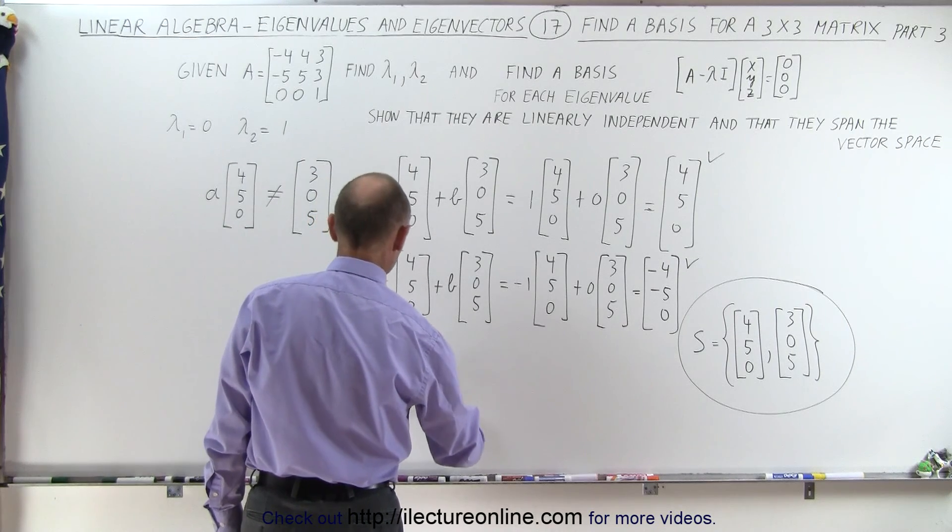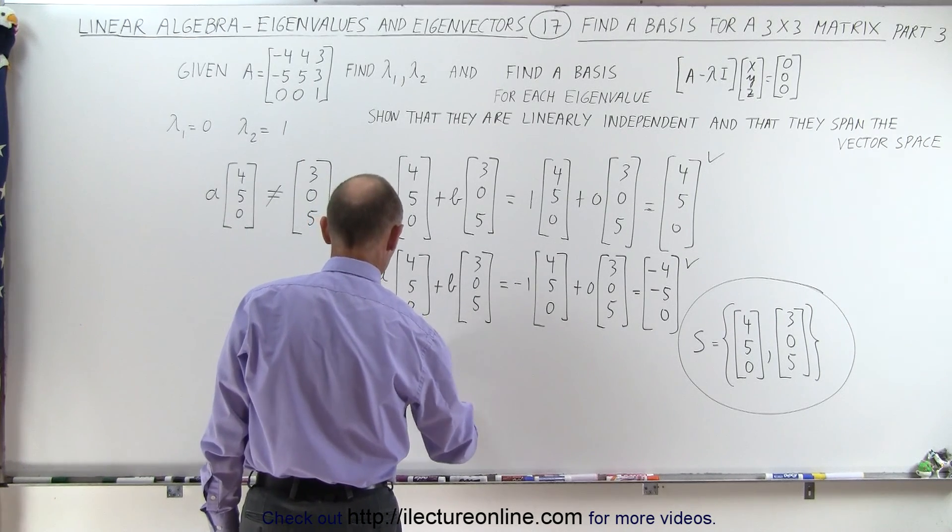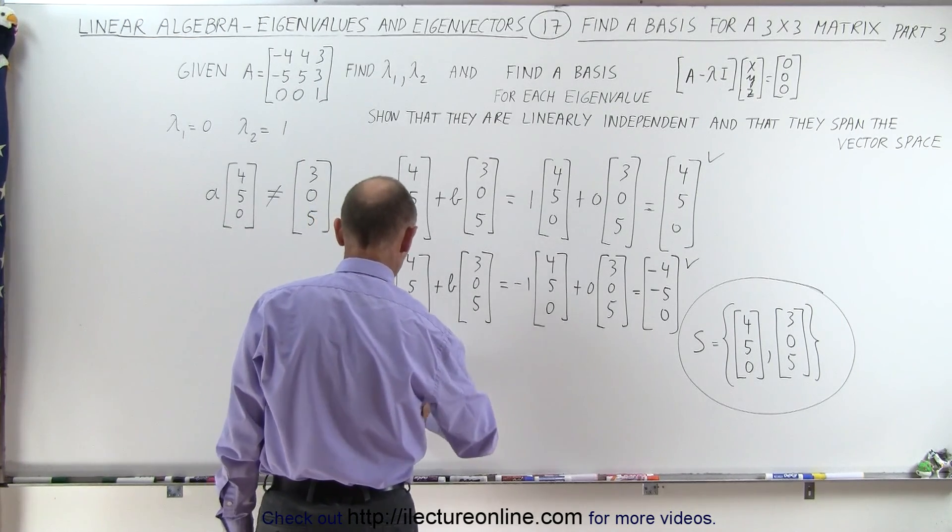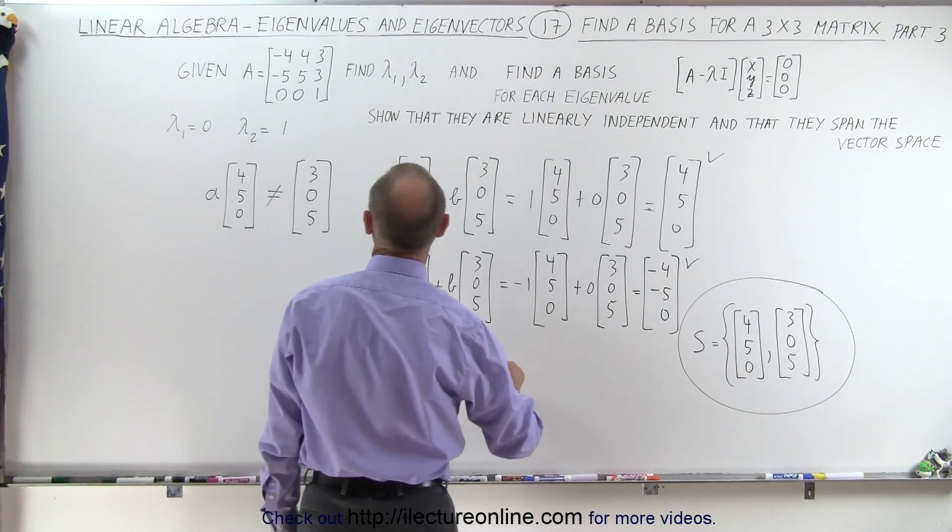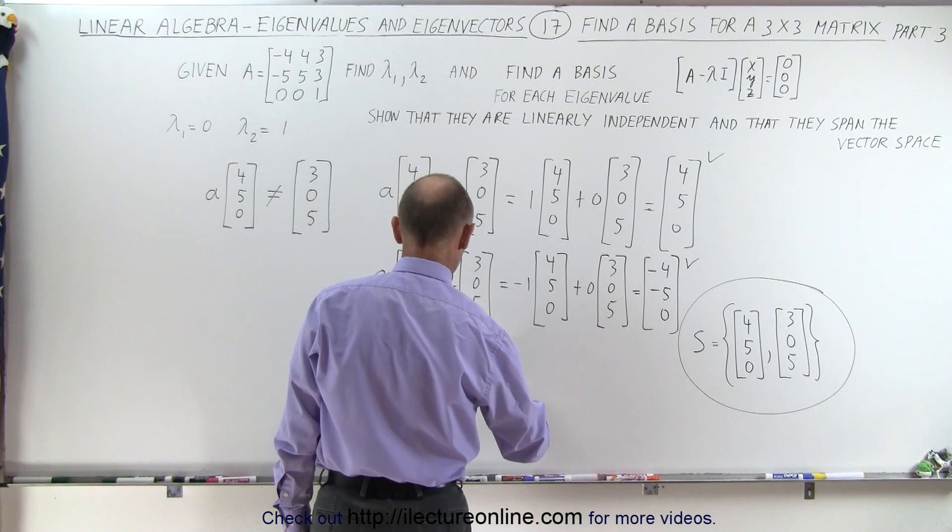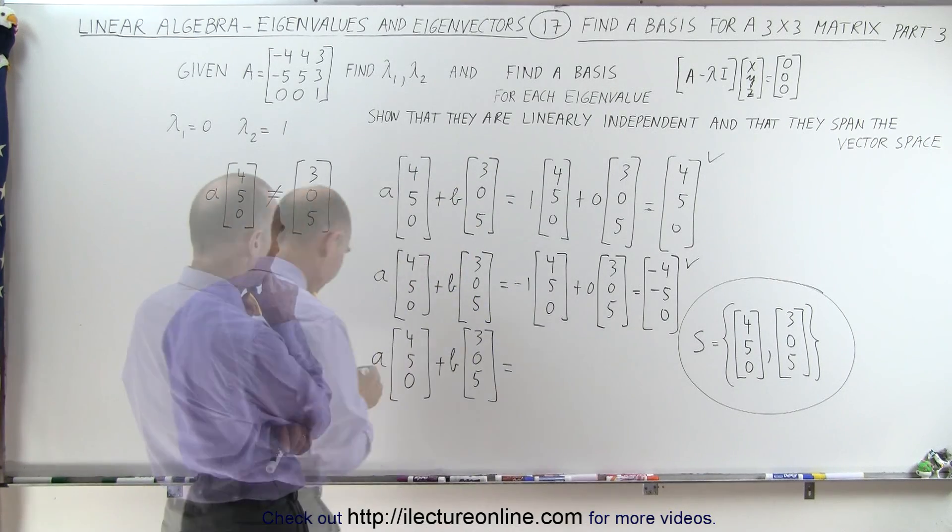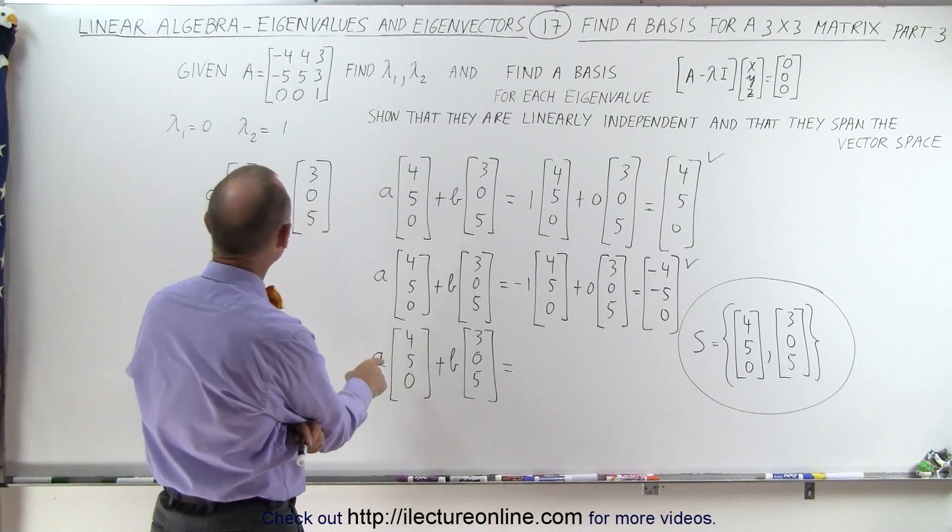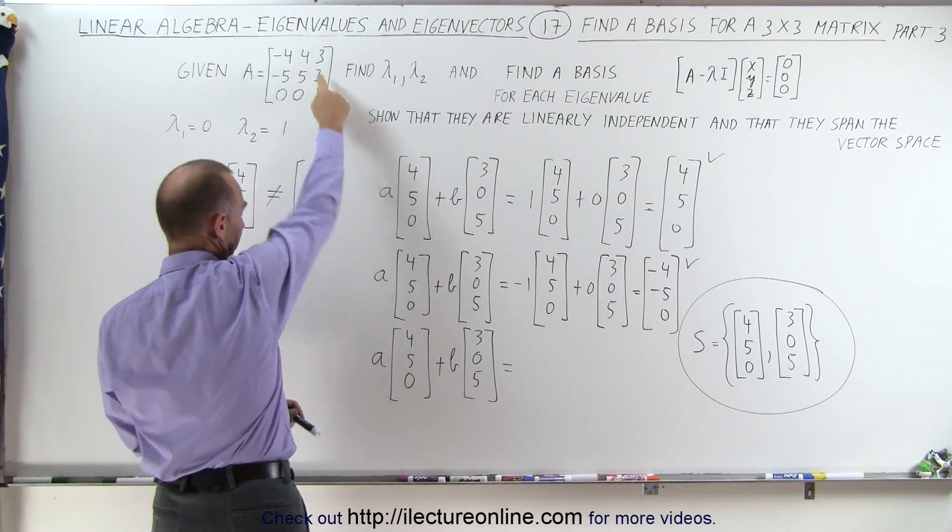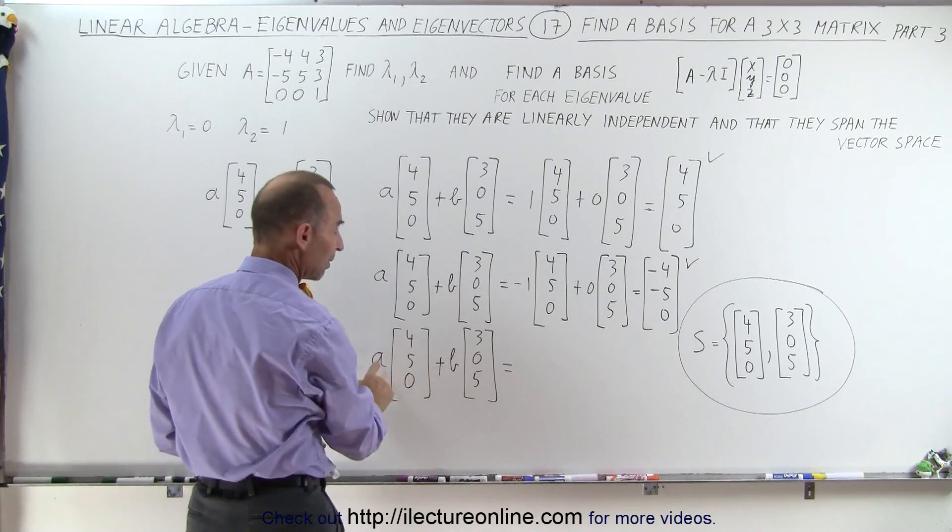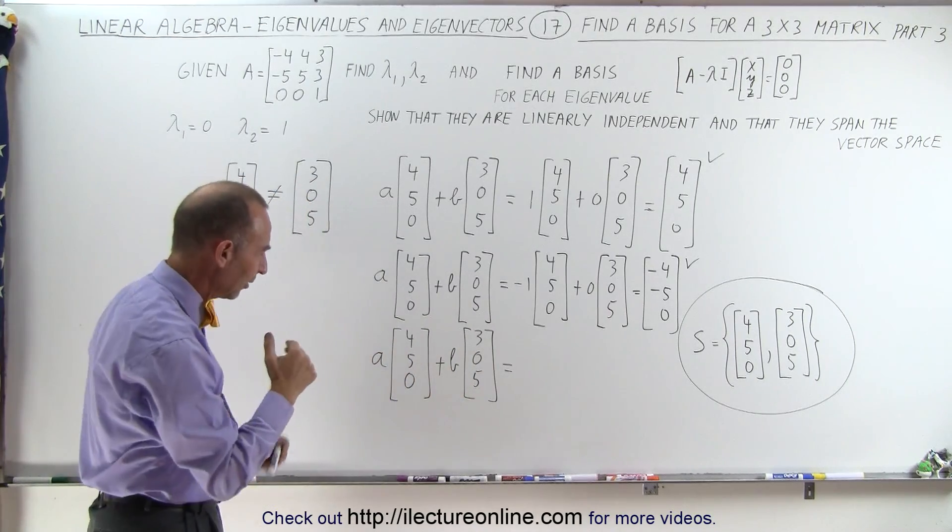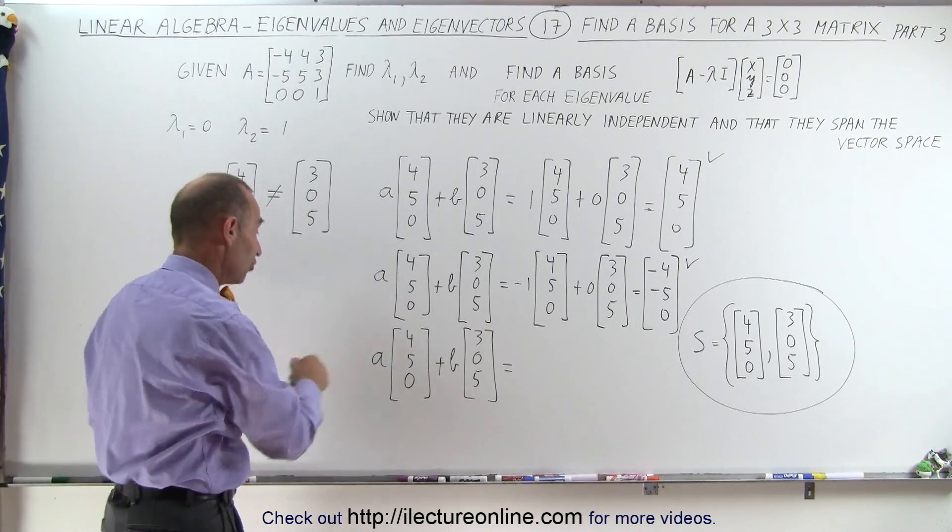So now we're going to multiply [4, 5, 0] times some constant a plus b times [3, 0, 5]. Let's see. If I want to get a 3 here, if I make a times 5 equal 3, that gives me 3/5. I think that a should be 3/5.